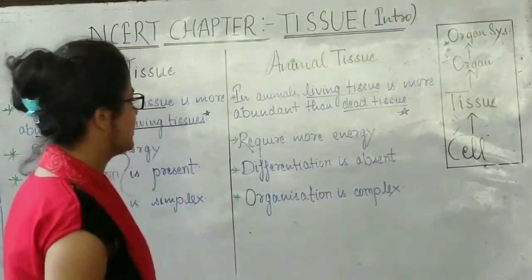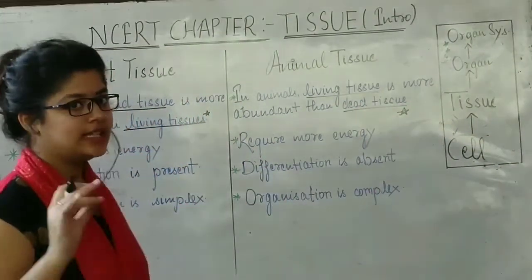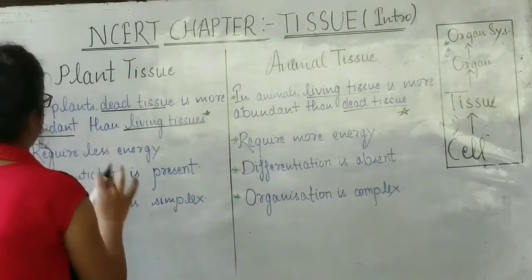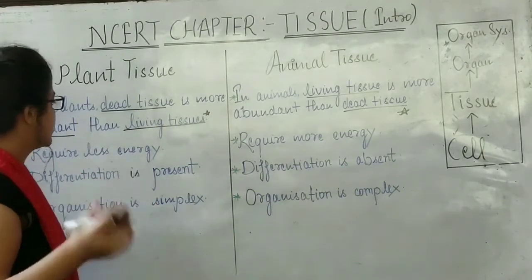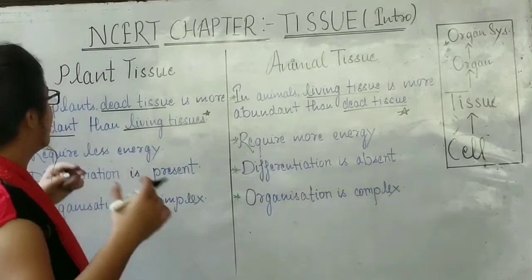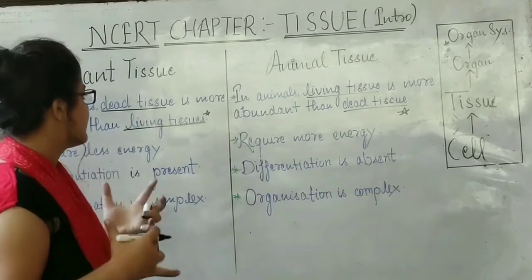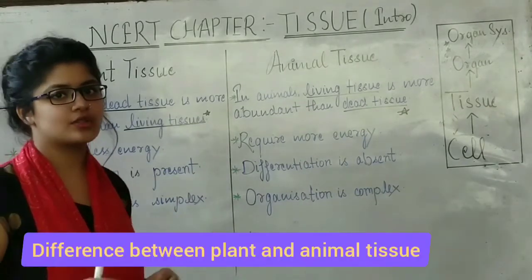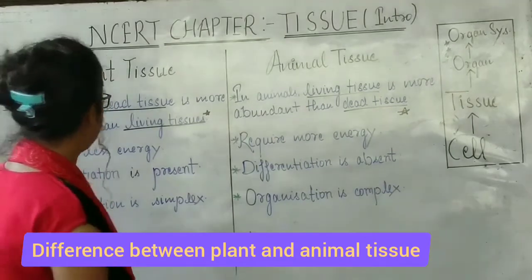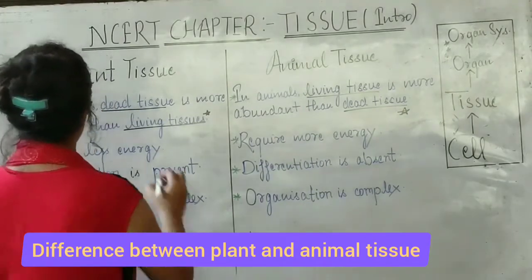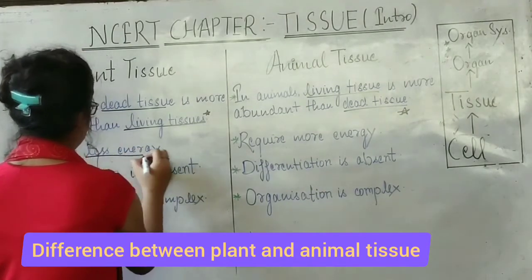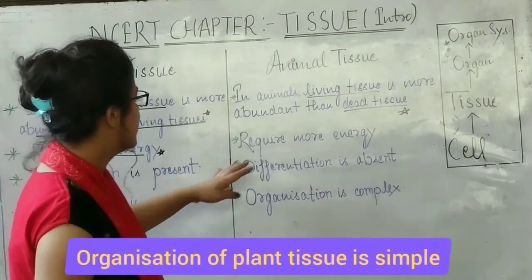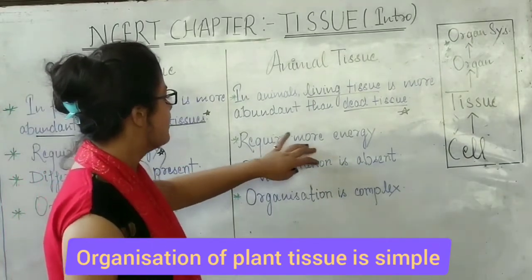In plants, dead tissues are more abundant than living tissues. Second point: plant tissues require less energy because dead tissues do not need energy. In the case of animals, they require more energy.